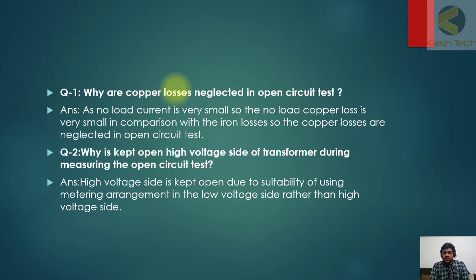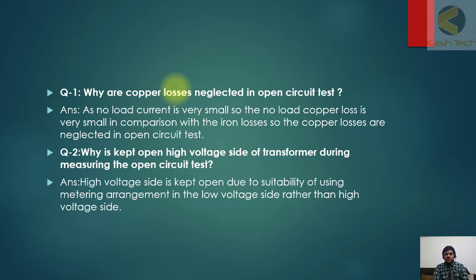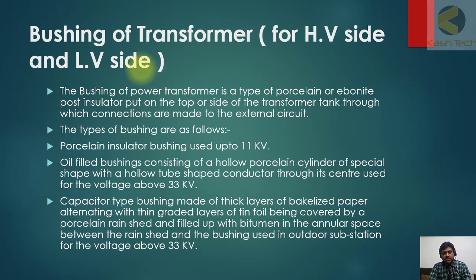Question: Why are copper losses negligible in the open circuit test? Answer: Because the no-load current is very small, the no-load copper loss is very small in comparison with the iron losses, so copper losses are neglected. Question: Why is the high voltage side kept open during the open circuit test? Answer: The high voltage side is kept open due to the suitability of using metering arrangements on the low voltage side rather than the high voltage side. Applying voltage on the LV side and measuring on that side is much more practical.